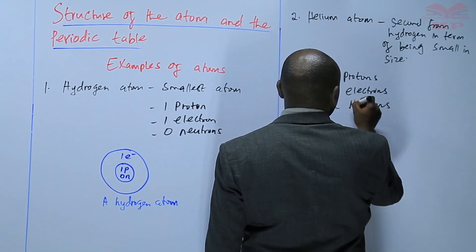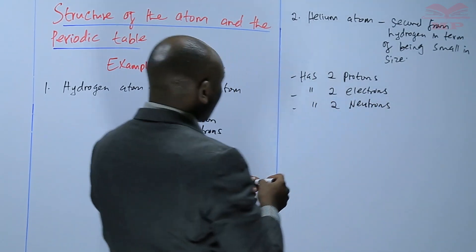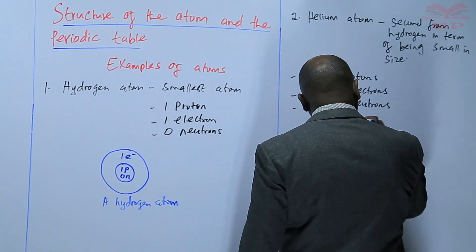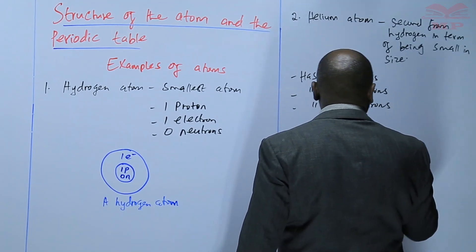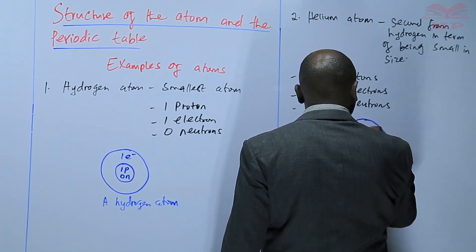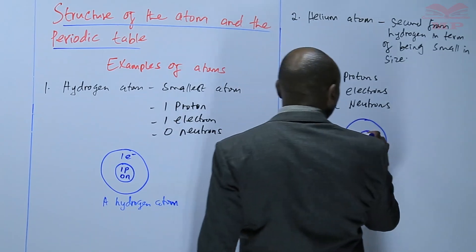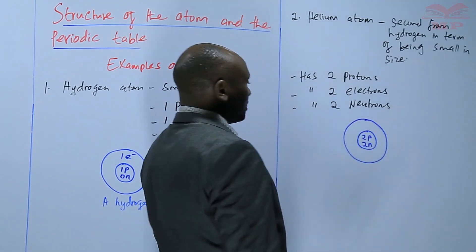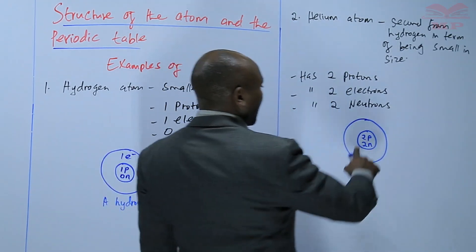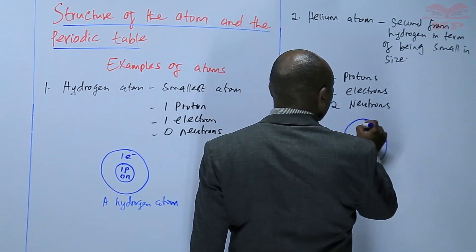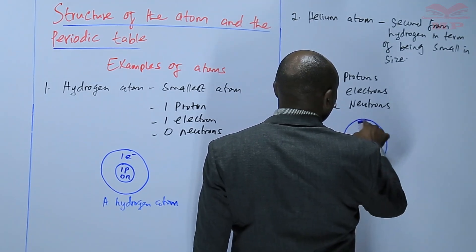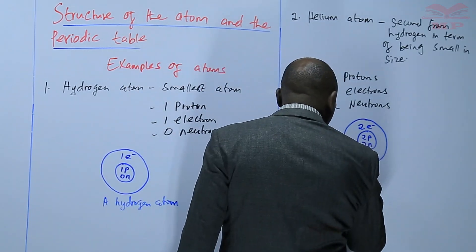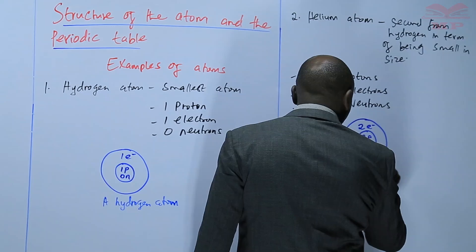So, two neutrons, two protons. In terms of the structure, we have two P in the nucleus and two N in the nucleus as well. The electrons are in the energy levels, so we have two E — two electrons in the energy level. This shows a helium atom.